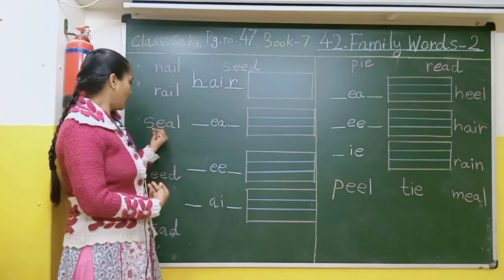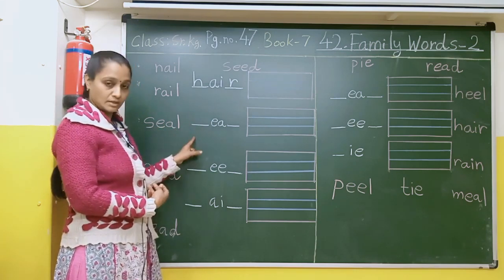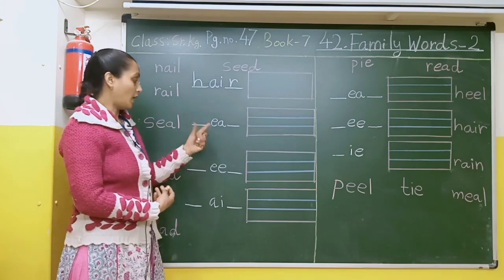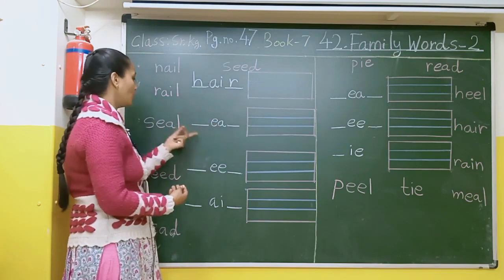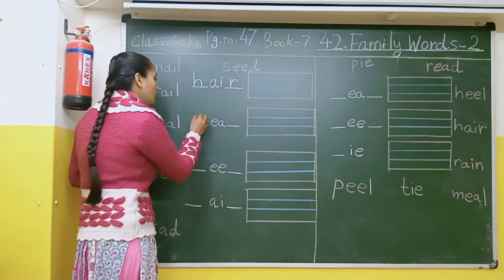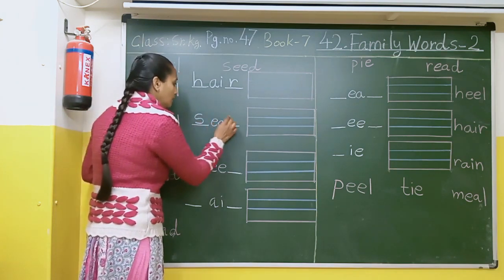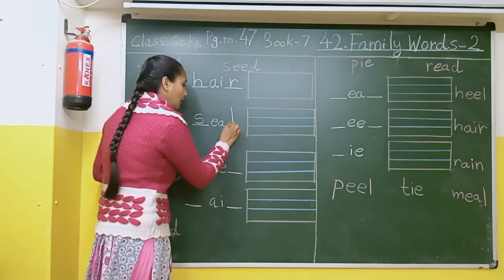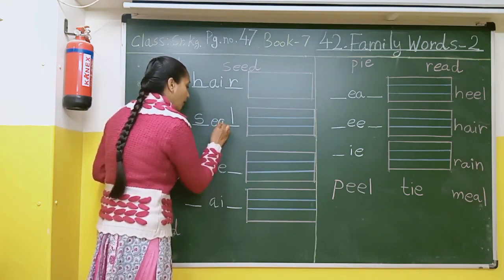Yahan jo dikha hai? Seal jo hai — S-E-A-L, seal. So here we will write S-E-A-L.